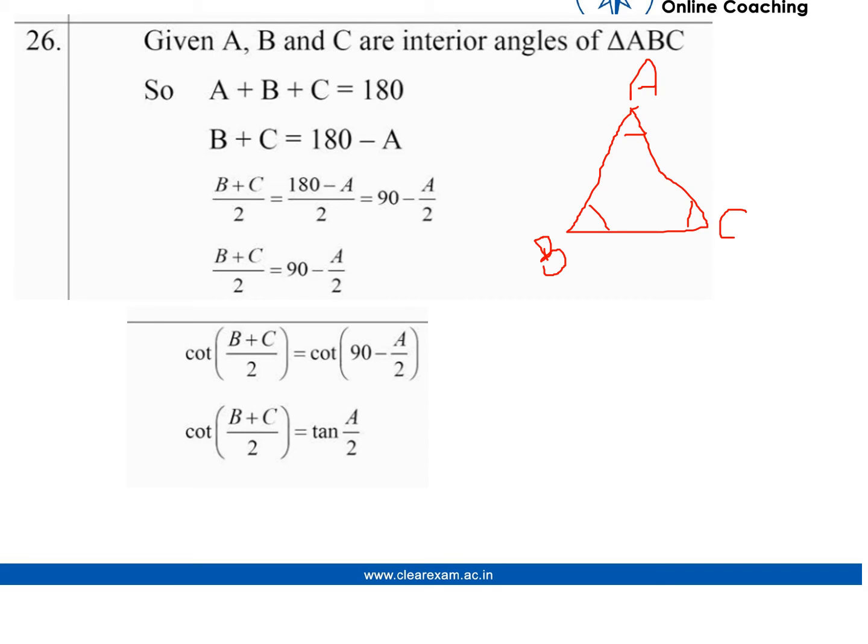So, we know that sum of angles of a triangle gives us 180 degrees, and we shift A to the other side, and we get B plus C equal to 180 minus A, and we divide the whole equation by 2.